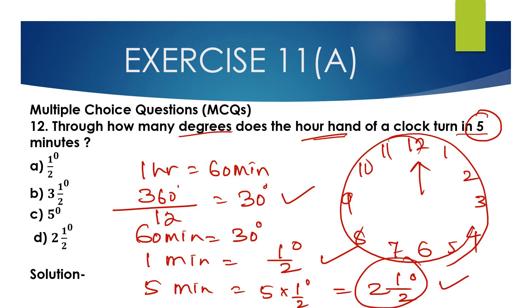So option D — 2 and a half degrees — is the correct option. The number of degrees the hour hand of a clock turns in 5 minutes is 2 and a half degrees. So option D is the correct answer.